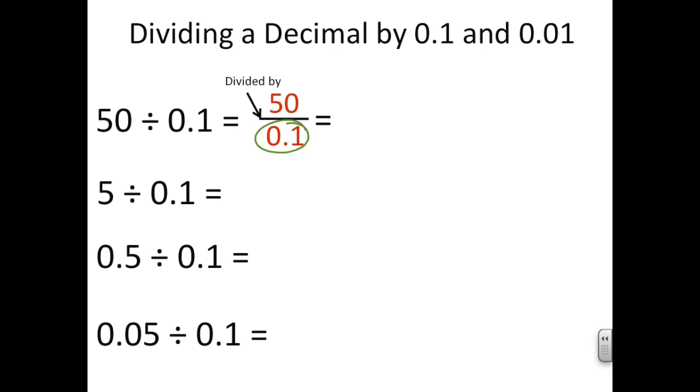We know that 0.1 times 10 equals 1. So we want to multiply 0.1 by 10 in order to make a whole number. We want that denominator or that divisor to be a whole number.